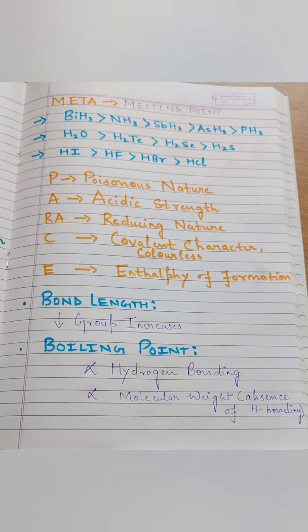Now let's talk about PARASAVE: P is for Poisonous nature, A is for Acidic strength, RA is for Reducing nature, C is for Covalent character (also Colorless), E is for Enthalpy of formation. These are the physical properties of hydrides of P-block which increase down the group. Please pay attention to the exceptions I have noted.